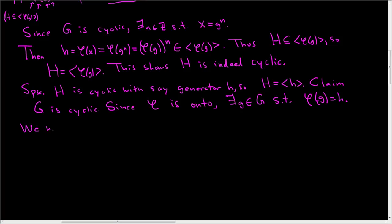So we will show that G is equal to the cyclic group generated by little g. So take x in capital G and suppose it's arbitrary. And we have to show that it is a power of little g somehow. Well, how could we do that?